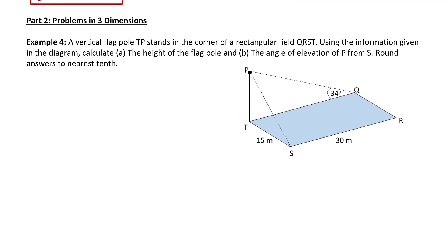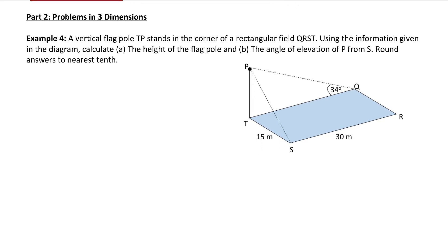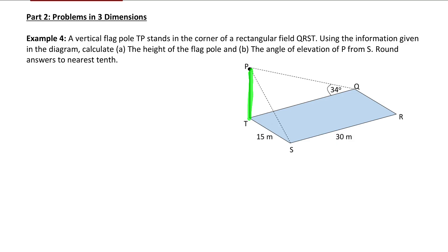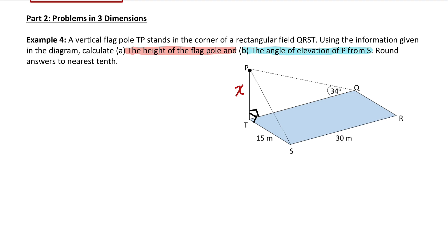Now let's move on to problems in three dimensions. Example five: a vertical flagpole TP stands in the corner of a rectangular field QRST — think of the rectangle as the ground with the pole coming straight up. The pole forms 90-degree angles with the ground in both directions. We need to find the height of the flagpole (side TP, called x) and the angle of elevation of P from S (called theta).